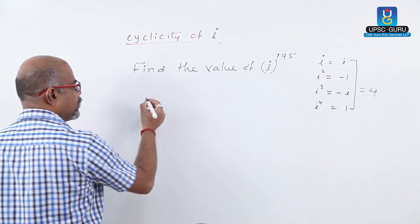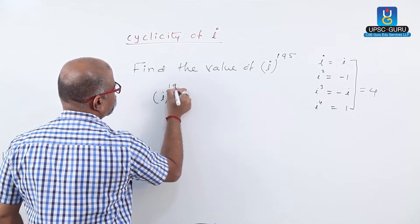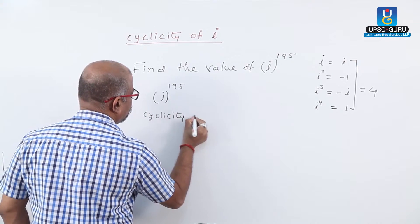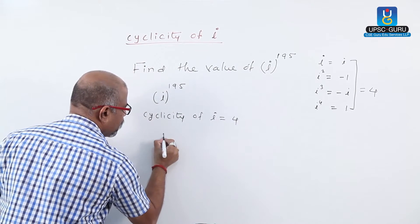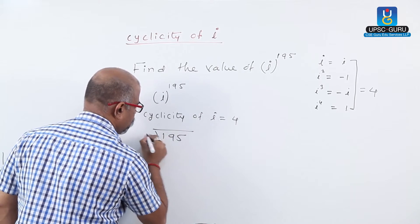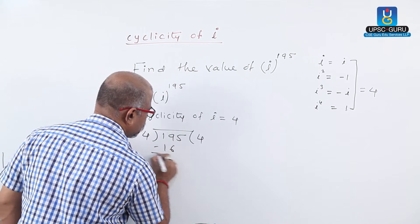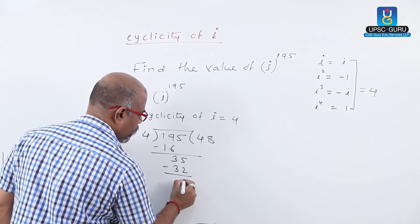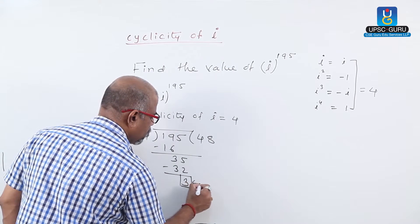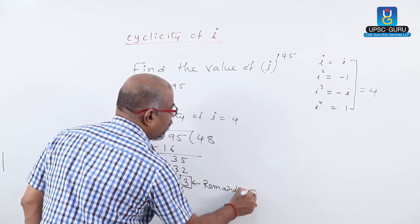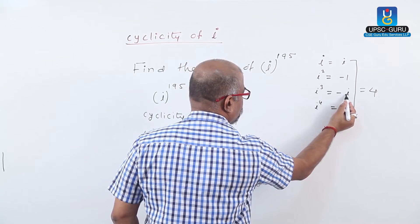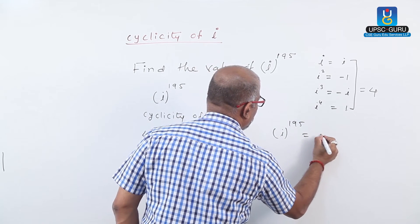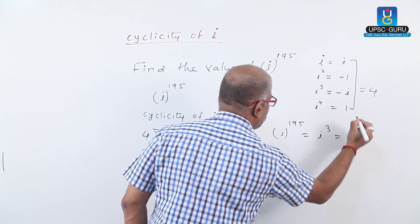Question: find the value of i raise to 195. We know that cyclicity of i is 4, so divide 195 by 4. 4 goes into 195 giving remainder 3. Remainder is 3 and we have i cube equals to minus i. Therefore value of i raise to 195 is nothing but i raise to 3, which equals minus i.